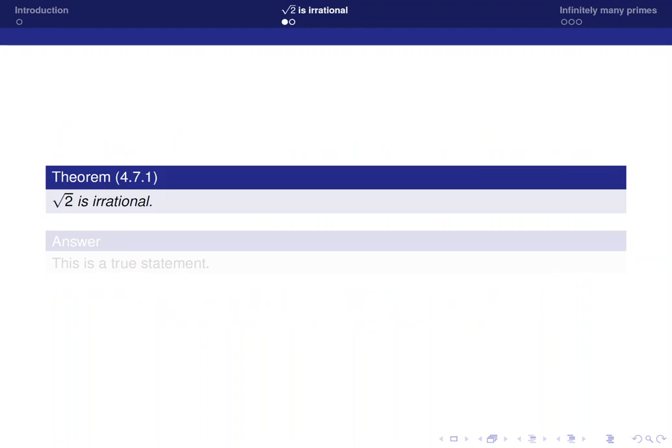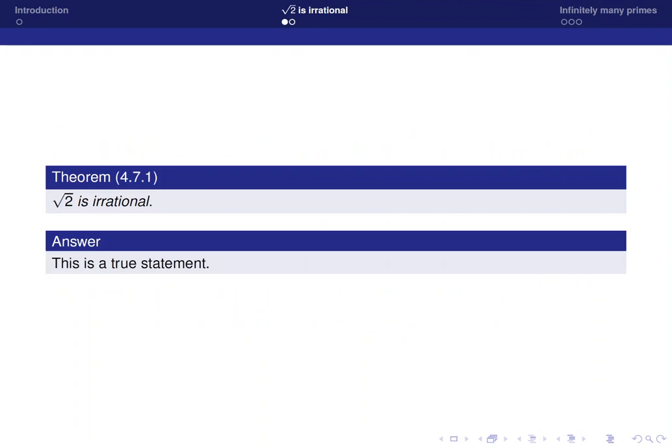So how can we use that to prove that square root of 2 is irrational? By the way, this is Theorem 4.7.1 in your book, and it's definitely a true statement.